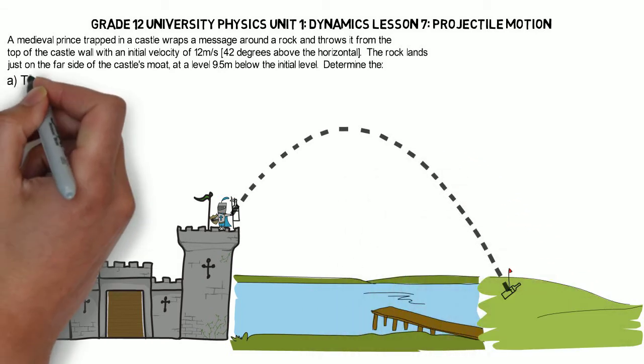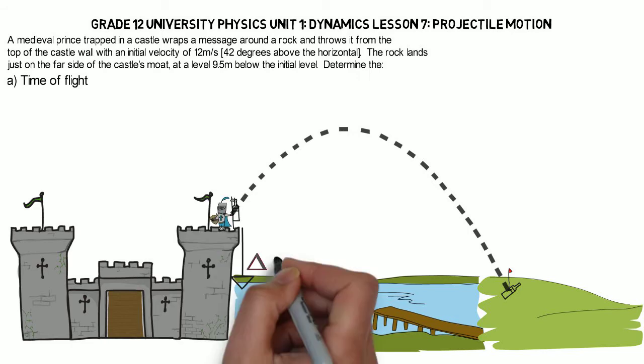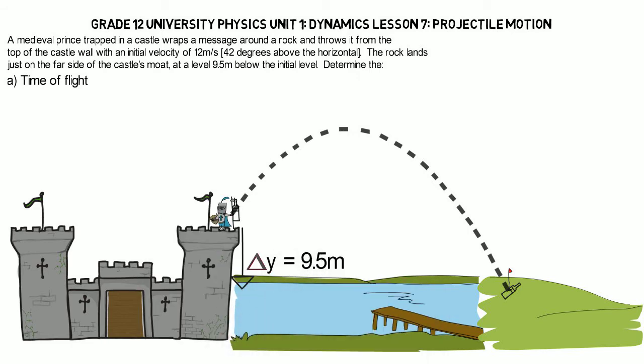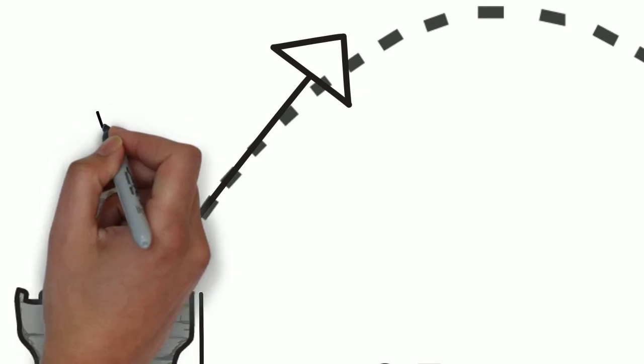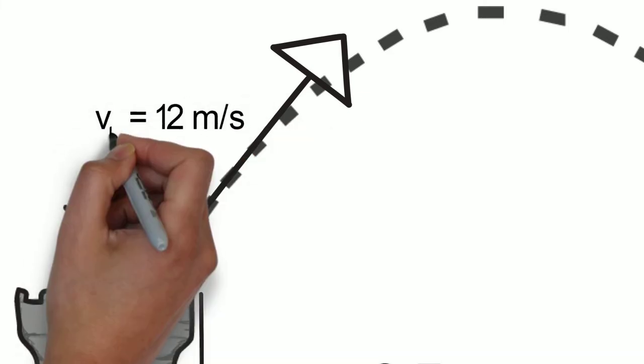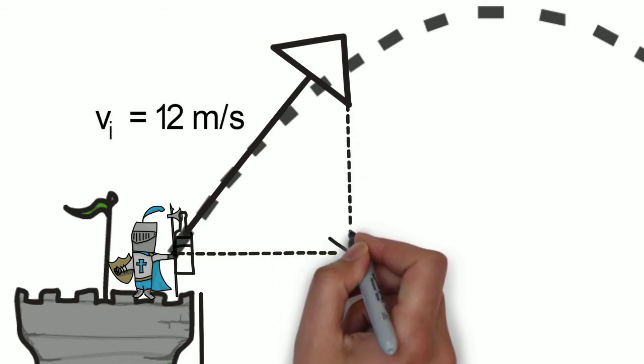Determine the time of flight. So let's write down all of our given information on our picture here. We know that the displacement in our vertical or Y component is 9.5 meters down. We also know the initial velocity is 12 meters per second, and that's going to be at an angle of 42 degrees above the horizontal.